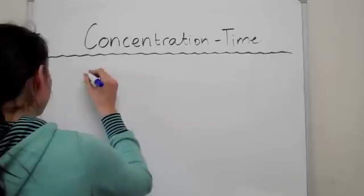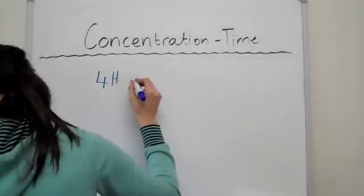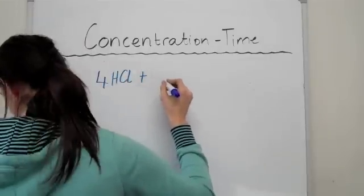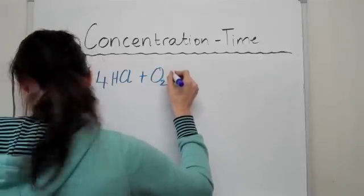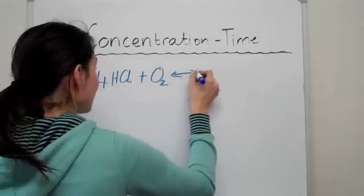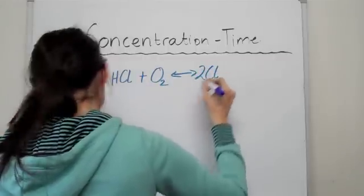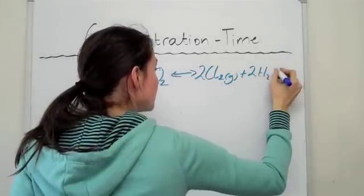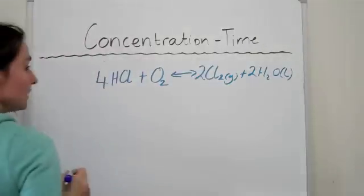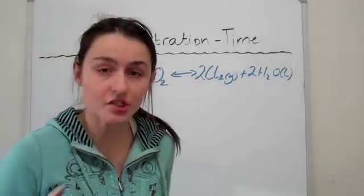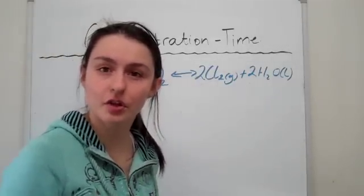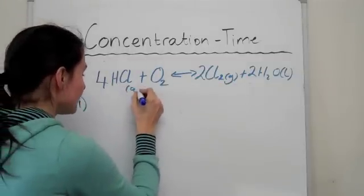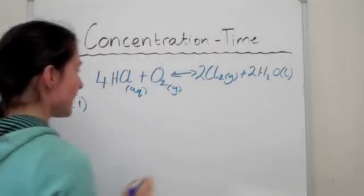So if I just find a reaction for HCl, I have to pick the longest one. 4HCl plus oxygen gives us 2Cl2 plus 2H2O. Okay so in this case let's have a look at what will happen to the system if we do a few changes and let's have a look at what would happen eventually to the concentration-time graph. So the first thing is let's just say that these are all in aqueous, this is a gas, this is gas and liquid.